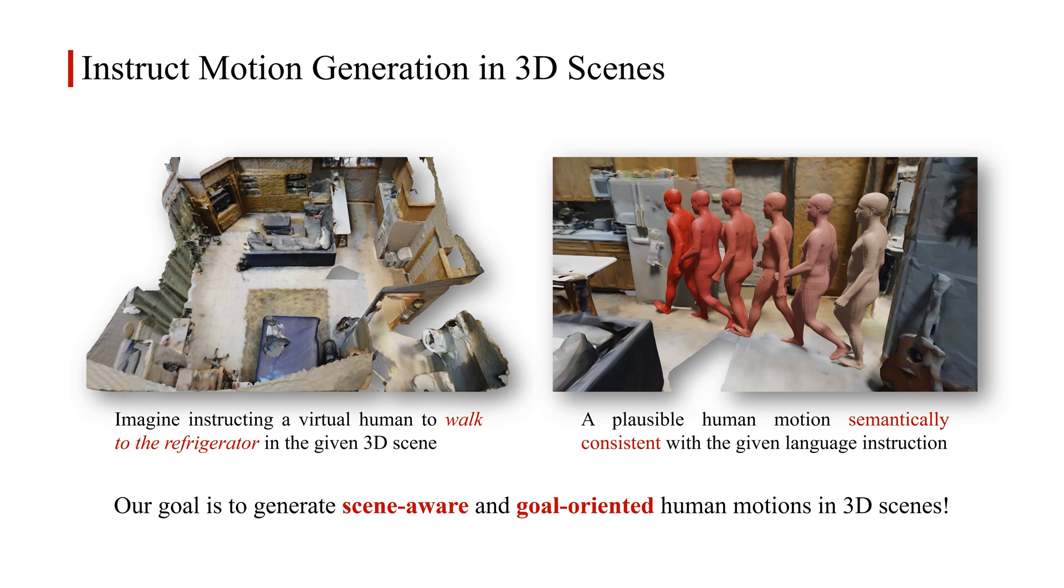Imagine instructing a virtual human to walk to the refrigerator in the given 3D scene. The agent first needs to comprehend the meaning of the instruction and understand the surrounding environment to generate desired interactions in the 3D scene. The right figure shows a plausible example, where the motion is semantically consistent with the given language instruction in the scene.